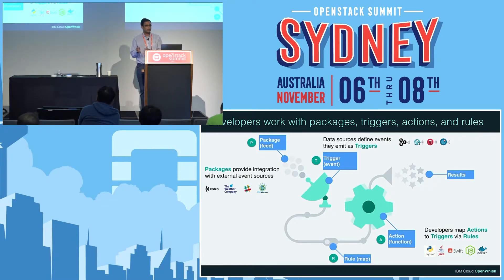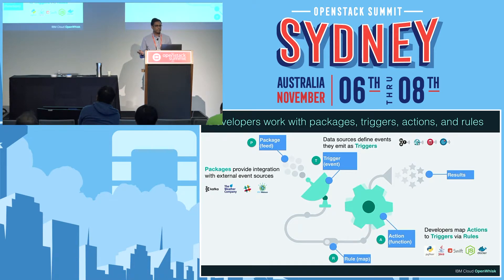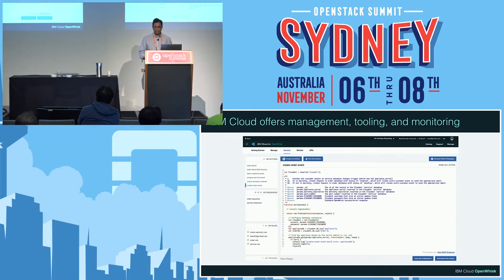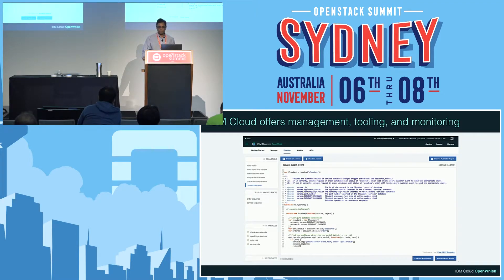We also have a number of packages that contain a set of actions. For example, we have a cognitive package on Watson where there's a set of actions to convert text to speech or speech to text. This is the IBM Cloud, where we implement the tooling for OpenWhisk. Not only do we offer the ability to develop functions, we have a full command line and GUI for you to do it. You've also got tooling to monitor the functions — how long they're taking, how many have executed successfully, how many haven't — providing a very fully functional OpenWhisk interface in the IBM Cloud platform.